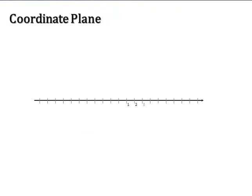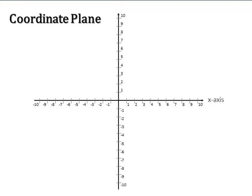The coordinate plane is basically made by two number lines, one horizontal and one vertical. The horizontal number line is called the X axis and the vertical, the Y axis. The point where the two axes cross is called the origin.